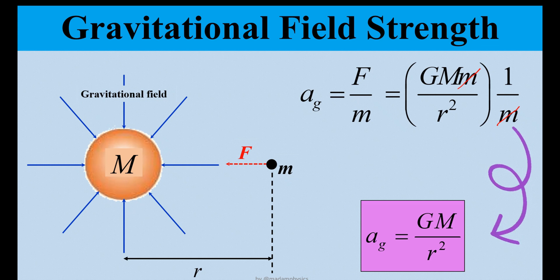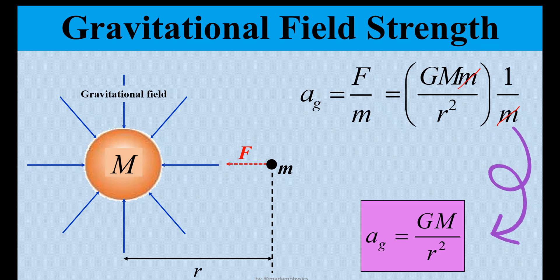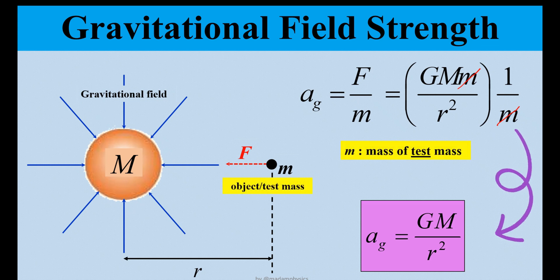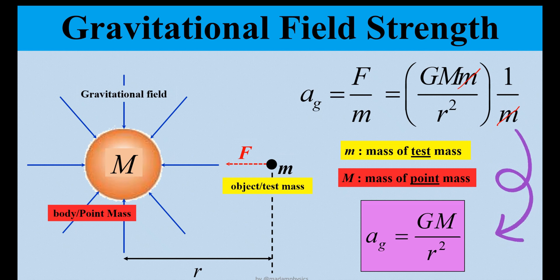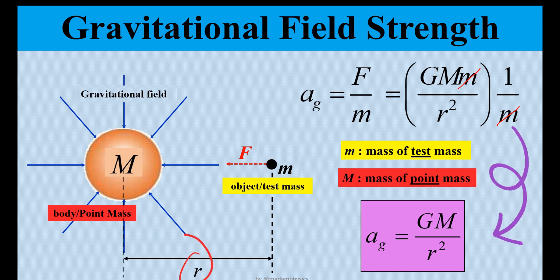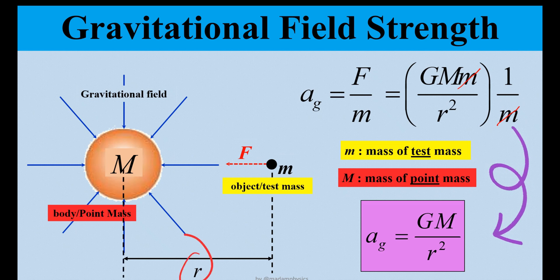Here, we need to differentiate between the two M values: small m represents the test mass, and big M represents the point mass. One important thing to remember when calculating Ag is that the distance R must be measured from the center of the point mass.